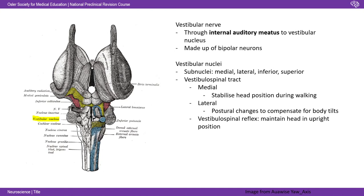There's a medial and lateral vestibulospinal tract. The medial vestibulospinal tract works on stabilising head position during walking, which makes sense intuitively — the vestibular organs detect acceleration of the head and connect via the spine to muscles that keep your head on top. The lateral vestibulospinal tract enacts postural changes important for body tilts as you're walking. All of this comes together as part of the vestibulospinal reflex, which is your body working to maintain your head in an upright position.